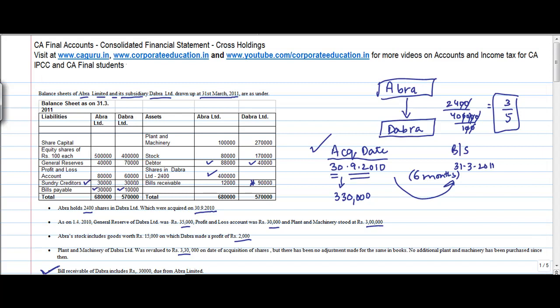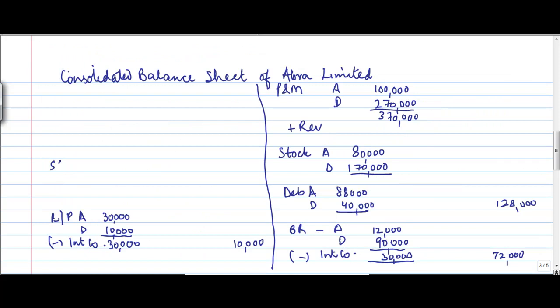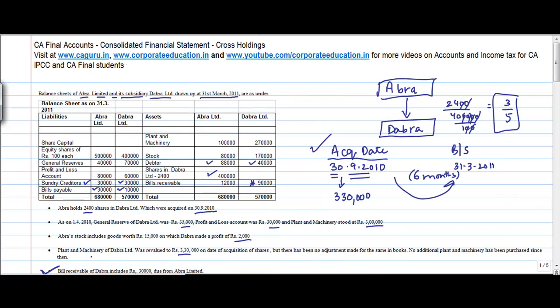So this is done. I can just remove this asterisk from here. Sundry creditors, 30,000, 30,000. No adjustments, simple. Sundry creditors. A, 30,000. D, 30,000. 60,000. Right?